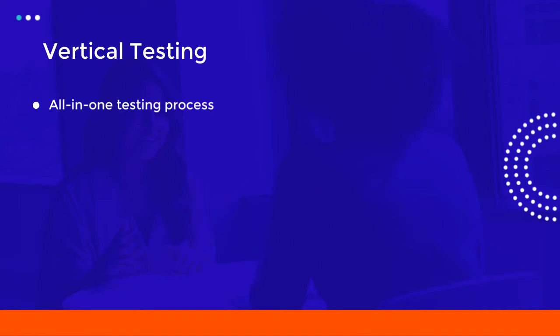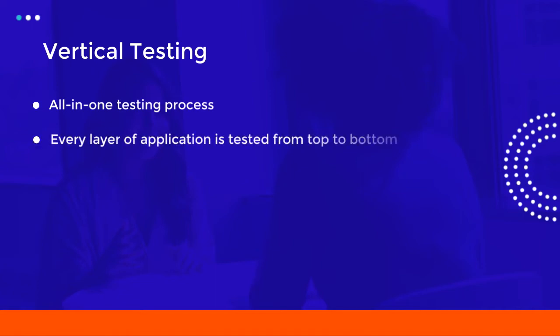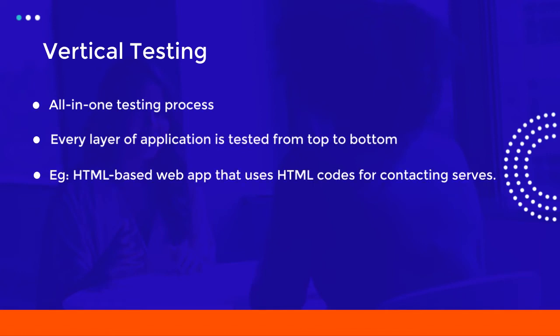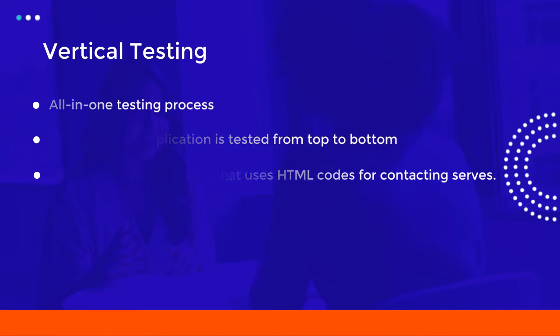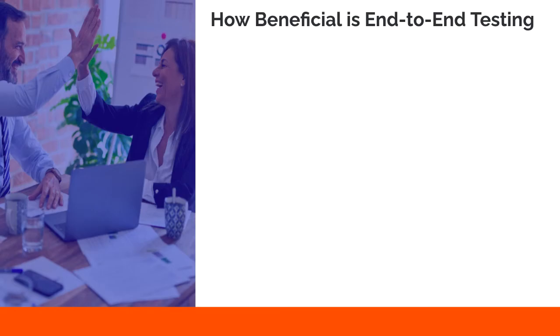The vertical testing method is an all-in-one testing process where every layer of the application is tested from top to bottom. A perfect example is an HTML-based web application that uses HTML codes for contacting servers. These applications require an API for generating SQL codes against the database.